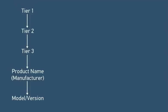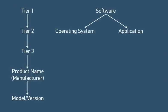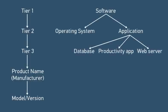In menus throughout the ITSM, SRM, and SLM applications, the Tier 1 category that you select restricts which Tier 2 categories are displayed, and the Tier 2 category that you select restricts which Tier 3 categories are displayed.